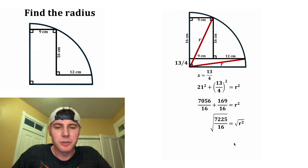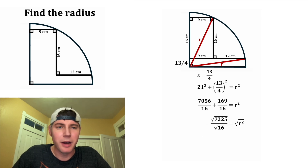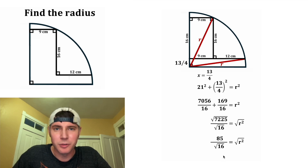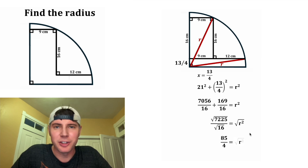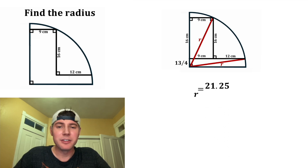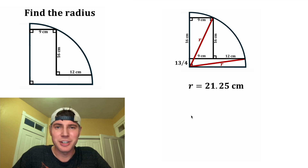Next, we square root both sides. The square root can be split across the fraction: √7225 = 85, and √16 = 4. On the right-hand side, the square root and square cancel each other out. So R = 85/4 = 21.25. And now we've found the radius of our quarter circle — it's equal to 21.25 centimeters. This is the answer to our question. Let's put a box around it. How exciting!